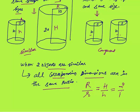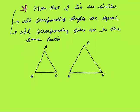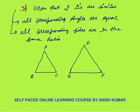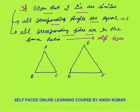When I say corresponding dimension, it means radius to radius and height to height. That is the meaning of similarity: shape will be same and sizes will be different. How will shapes come to be the same? When all corresponding dimensions are in the same ratio. Now let's discuss the case of similarity in triangles. If two triangles are given to be similar, then all corresponding angles will be equal, and all corresponding sides will be in the same ratio — the sides being in the same ratio gives different sizes, and all angles being the same gives the same shape.